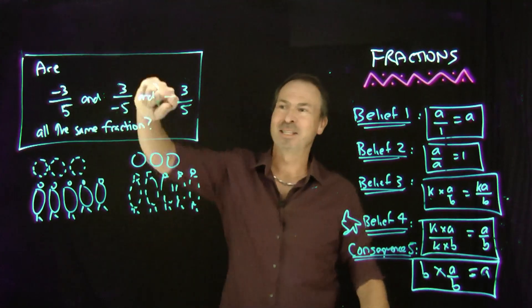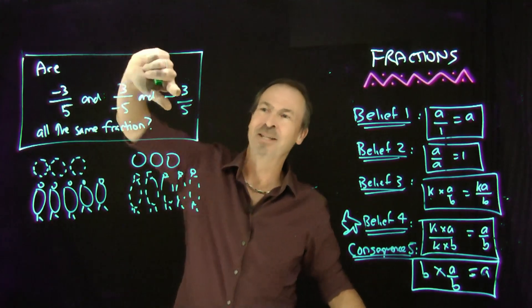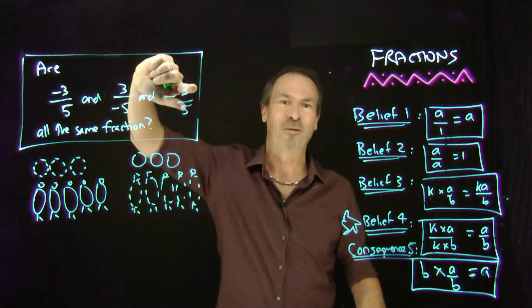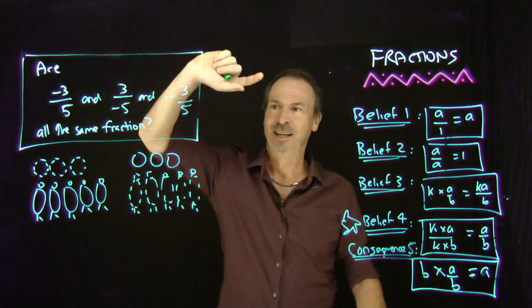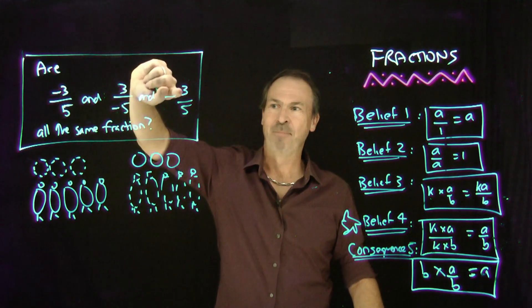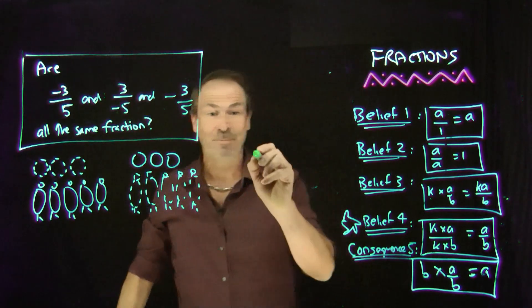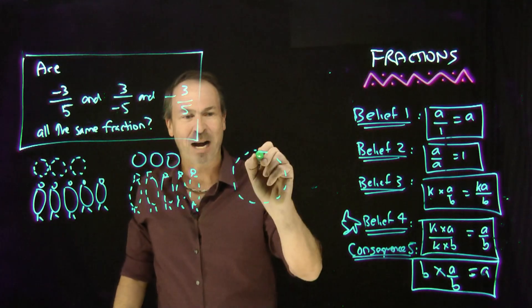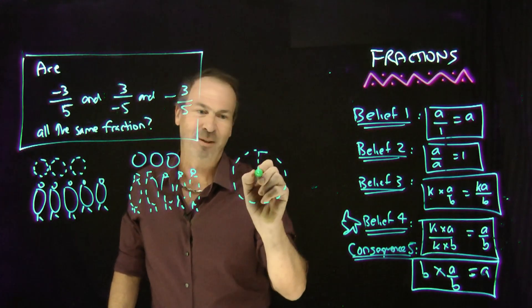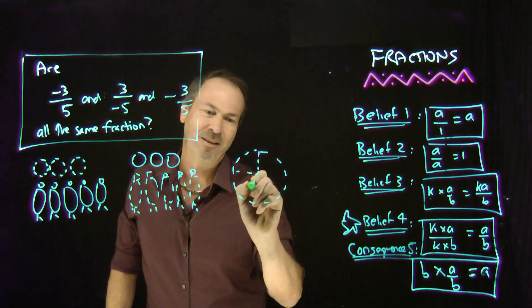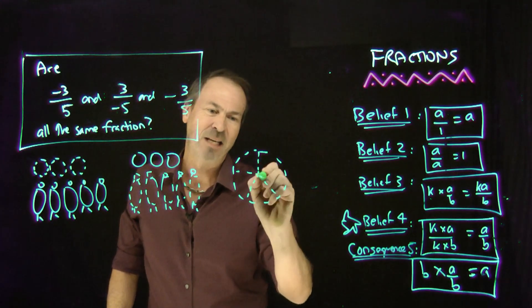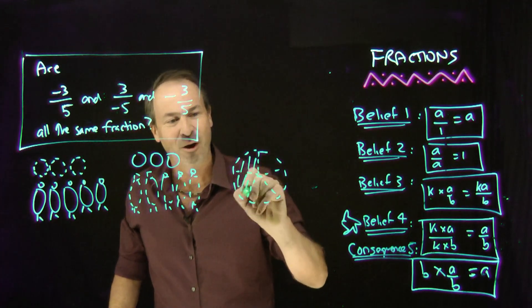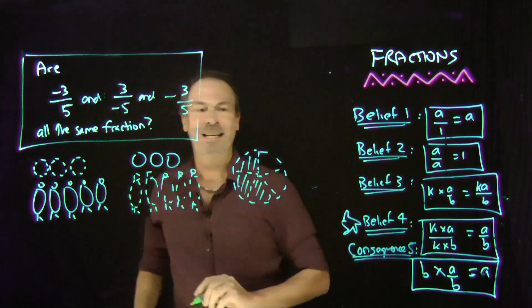But there's a third one. This is the opposite of three-fifths — the anti of three-fifths. So I need to draw an anti-pie and I want three-fifths of that anti-pie, which will be negative three-fifths. There's my anti-pie divided into fifths. So the third fraction is representing that.